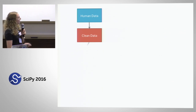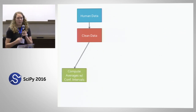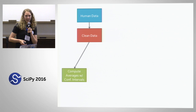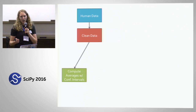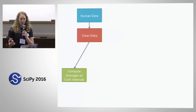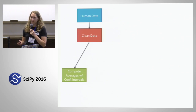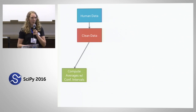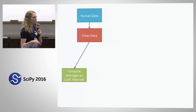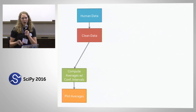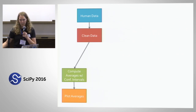Once we've cleaned the data, we want to actually do some analysis. In this case, we want to take an average response for each of the stimuli that we showed people, and maybe compute some confidence intervals. And then finally, once we've done this analysis, we want to actually plot the analysis — create a figure that will eventually end up in the paper.